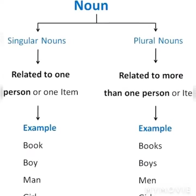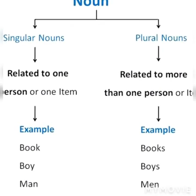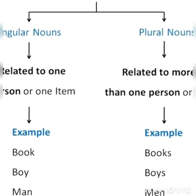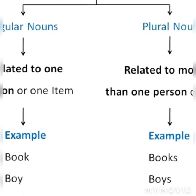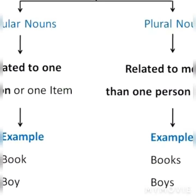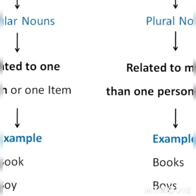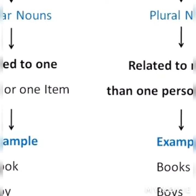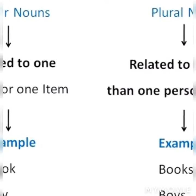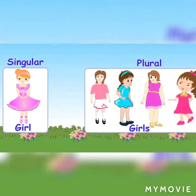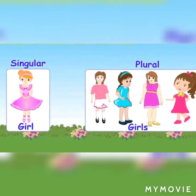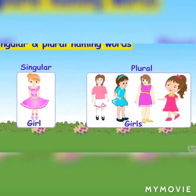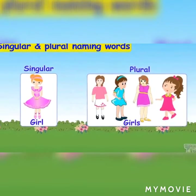By changing singular to plural, we generally add "-s" to the end of the word. For example, girl — girls.